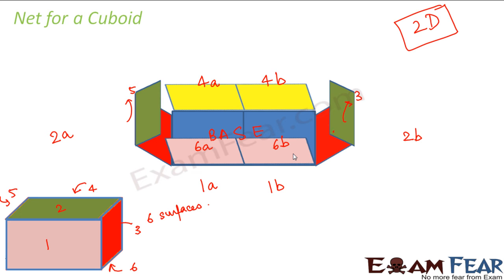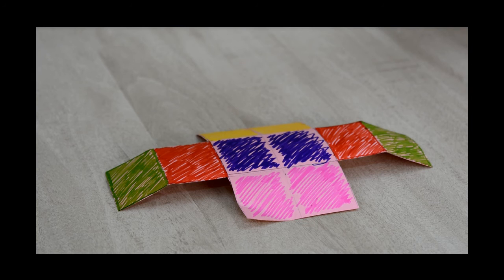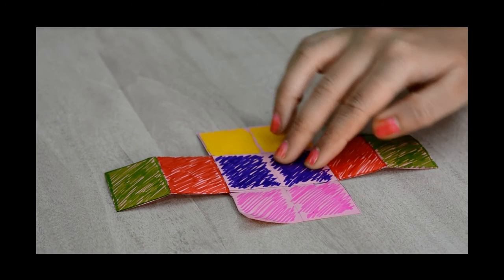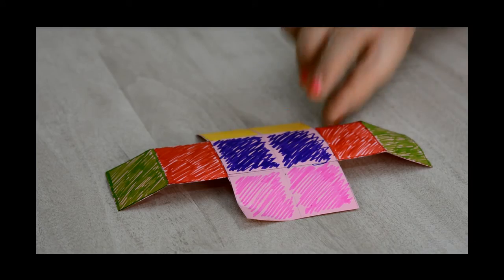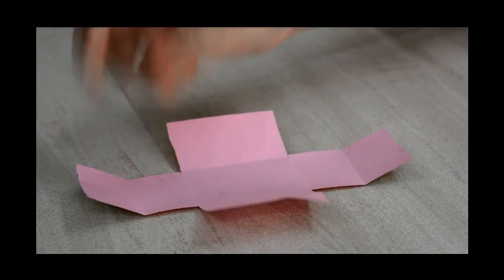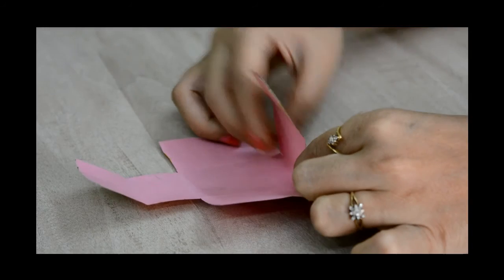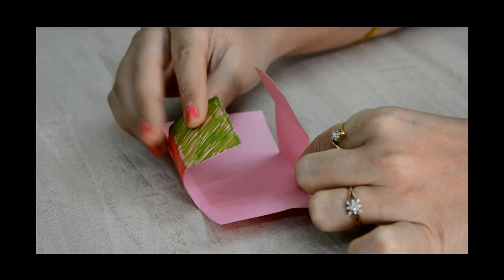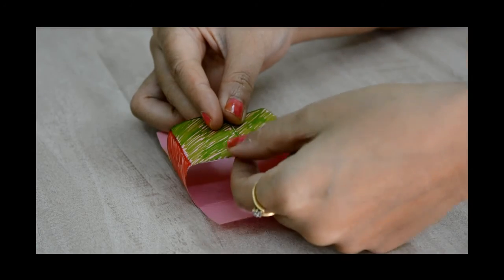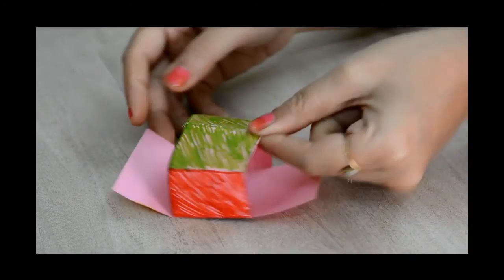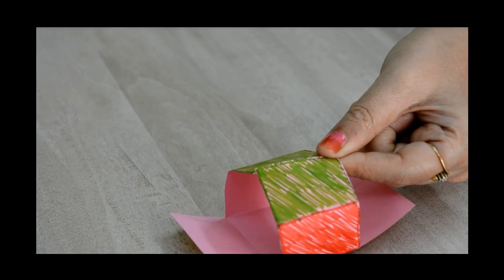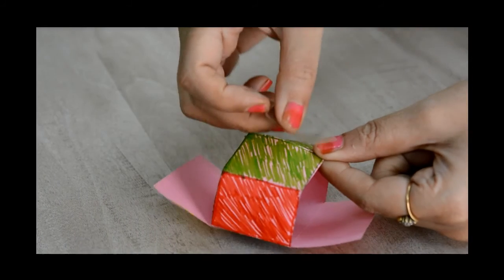So this very clearly shows that this was a net which was a two-dimensional outline. But when you make proper foldings with appropriate foldings, the same two-dimensional outline turns into a three-dimensional cuboid. So now we will experimentally do this. We will make this cuboid from its net. This sheet of paper is a net for a cuboid. We will see how we make a three-dimensional cuboid by making certain folds in this sheet of paper.